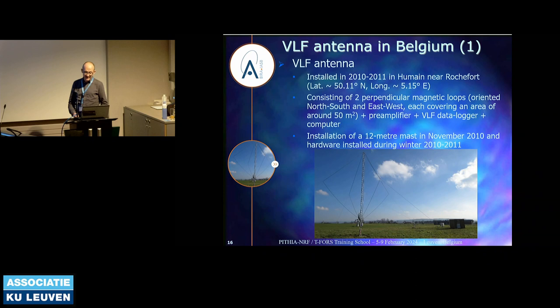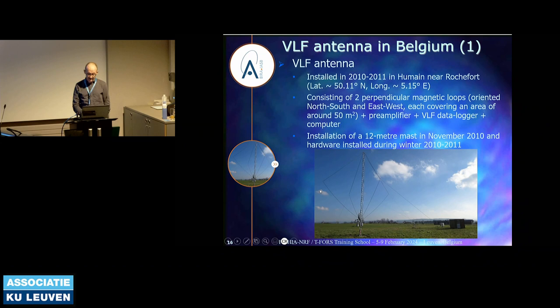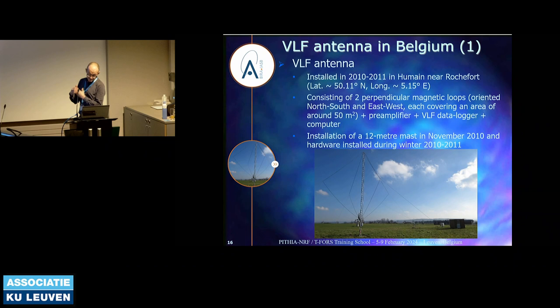We have installed two antennas at our institute. The first one is in Belgium, in Humain, about 70 kilometers south-east from here. This is the instrument: there is a mast of 12 meters installed 13 years ago, on which we installed two perpendicular magnetic loops — cables which form two squares of 50 square meters in a perpendicular direction. There is a preamplifier to amplify the signal recorded by those two antennas, then a data logger to convert into digital data, and a computer to make the analysis.